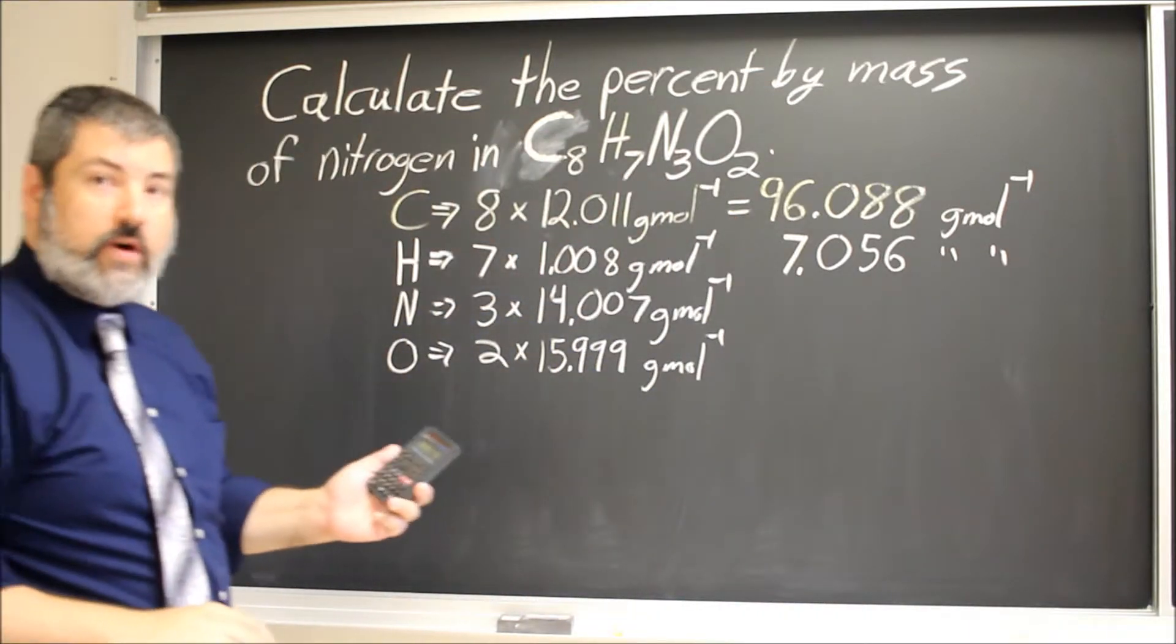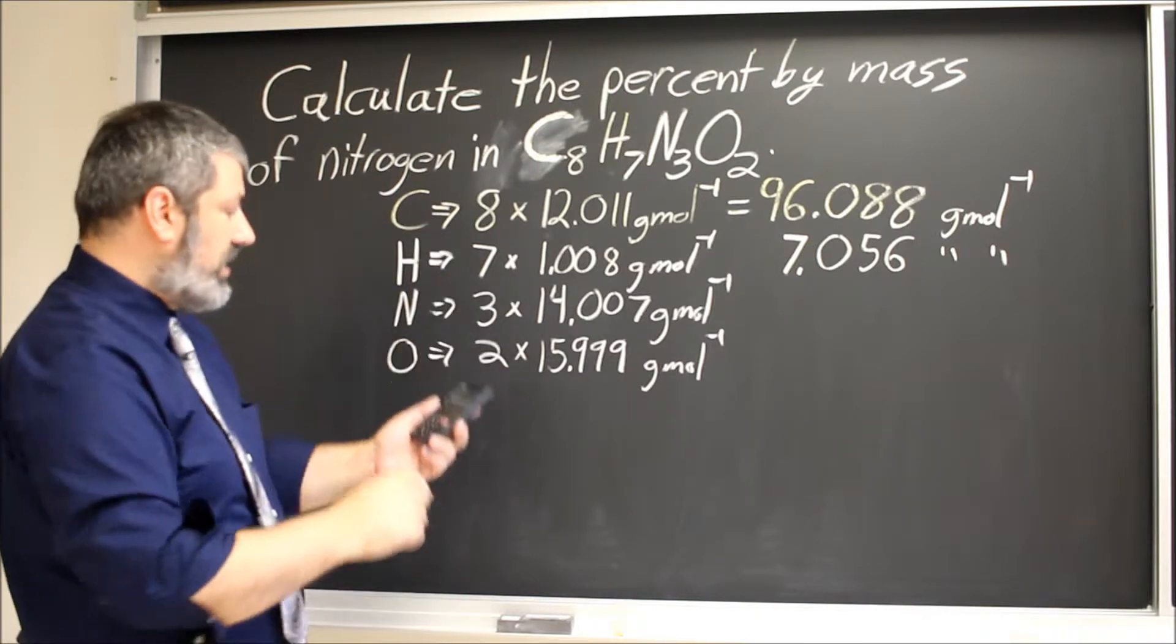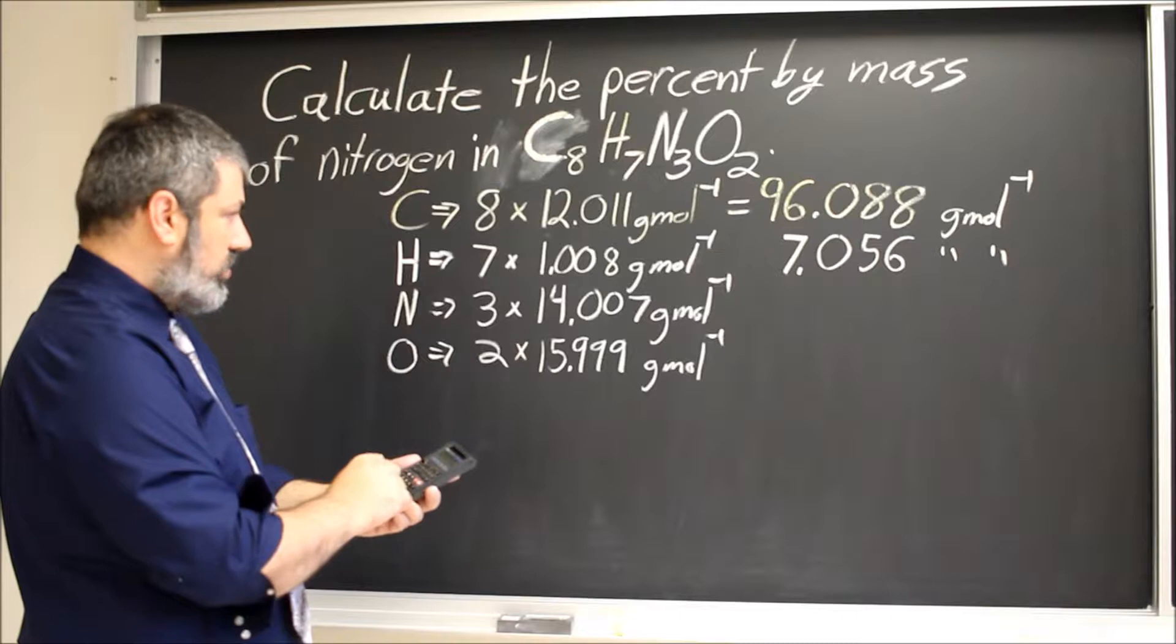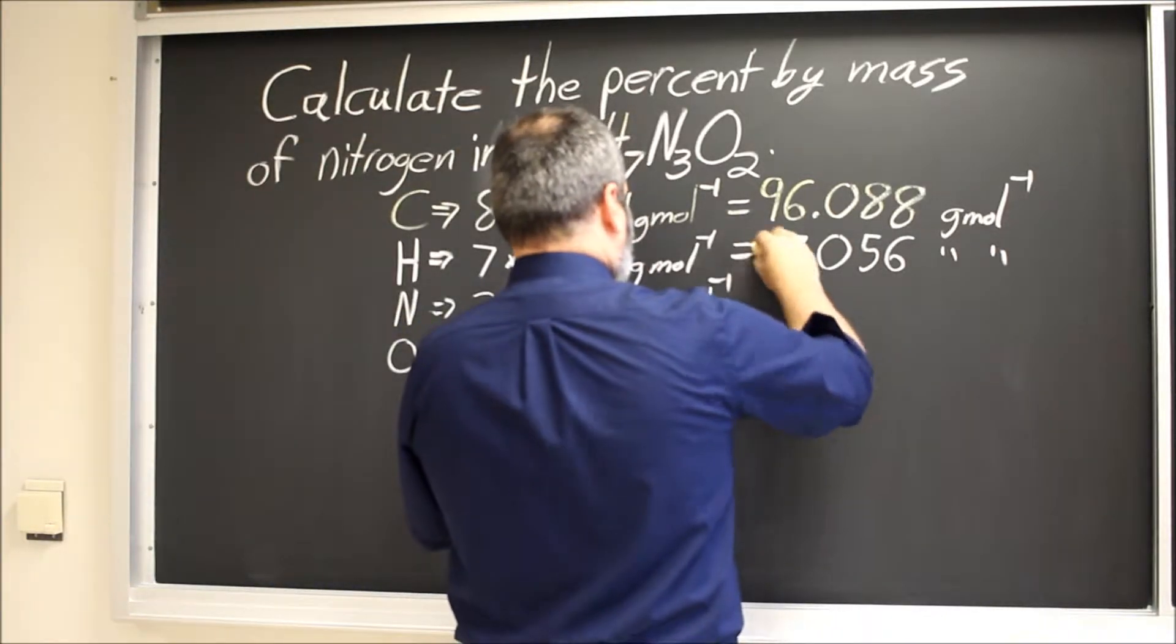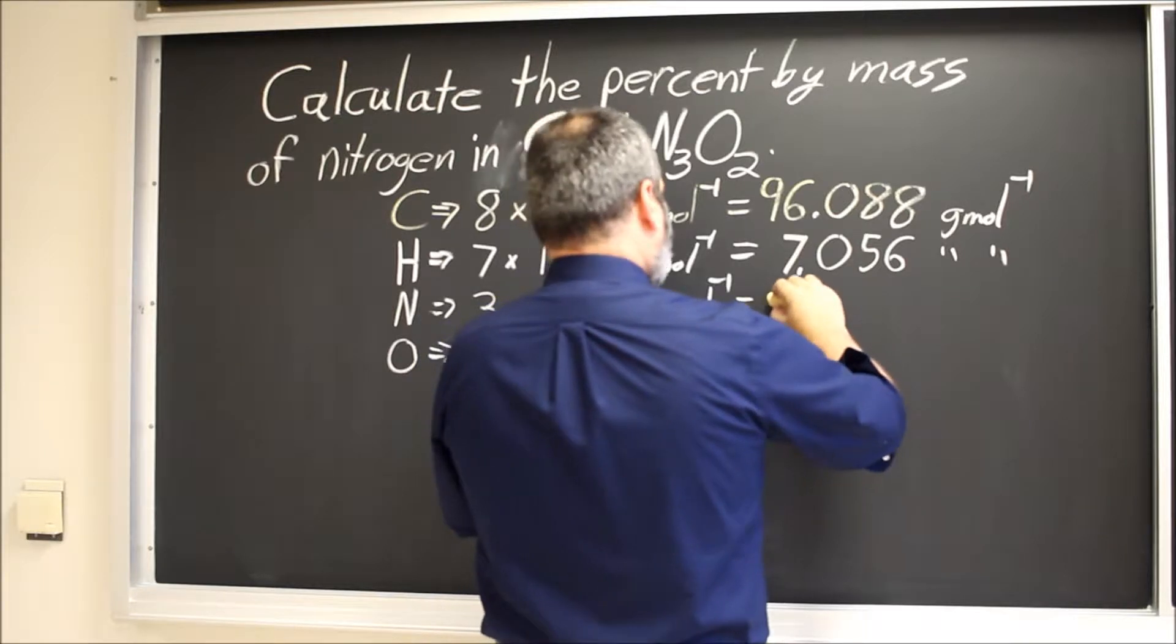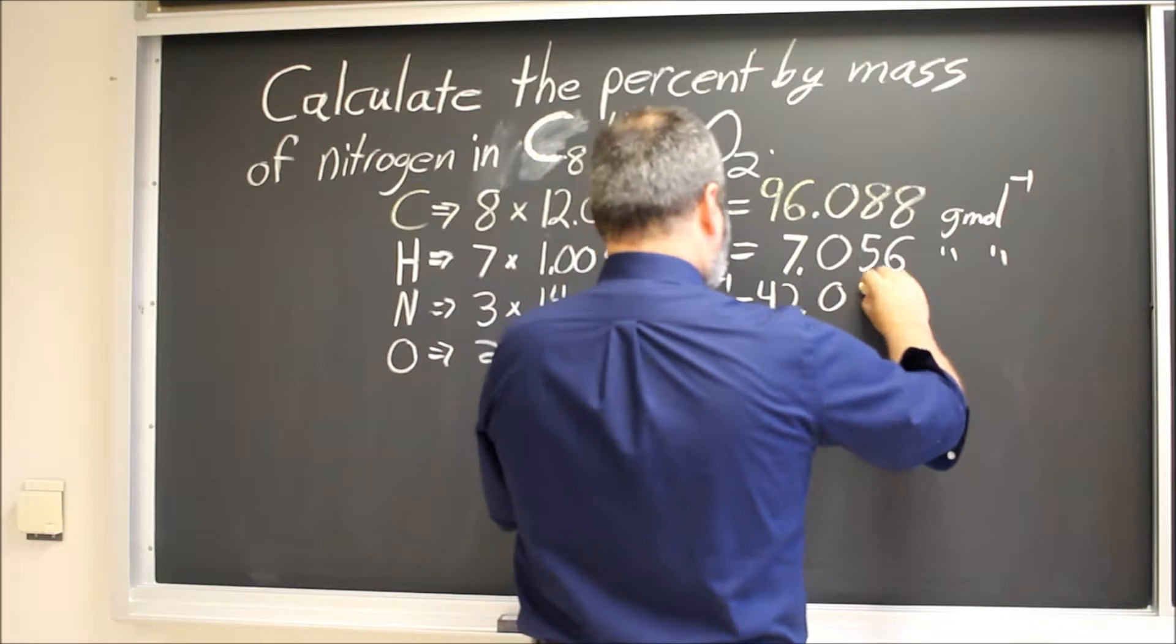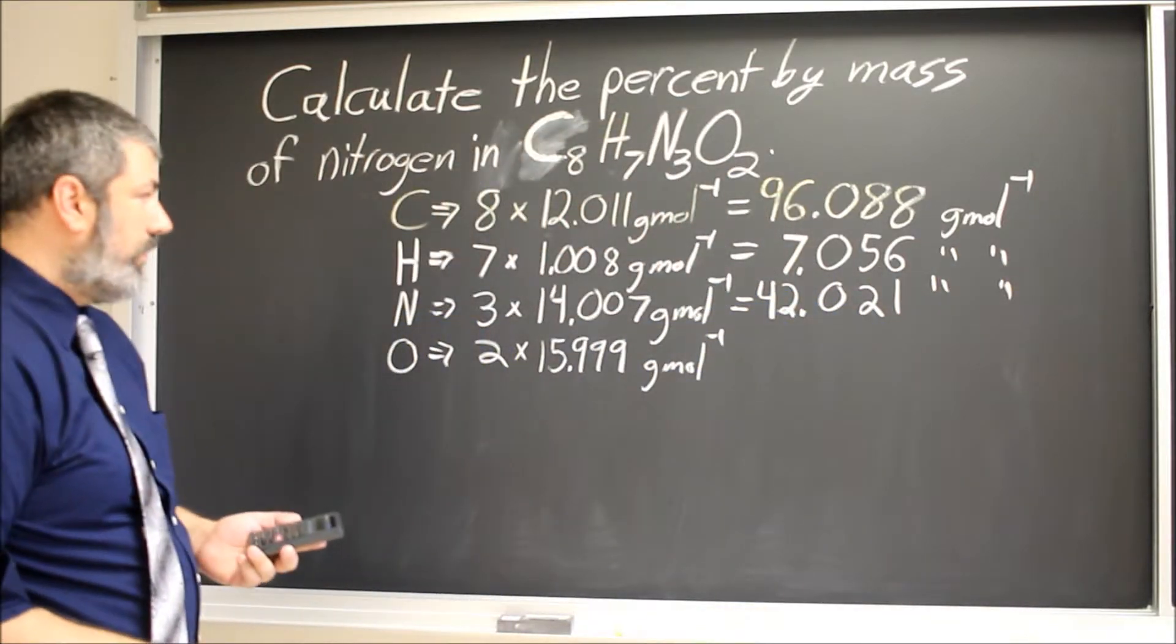You could shove all these numbers in your calculator, but I like to do it systematically, and we'll see in a second why that's going to be useful. So 3 times 14.007. So the nitrogen, its contribution is 42.021 grams per mole.